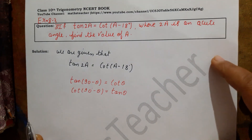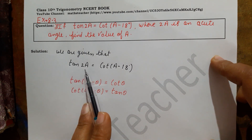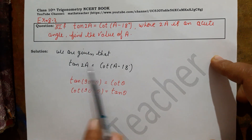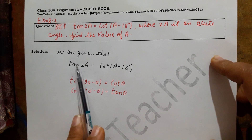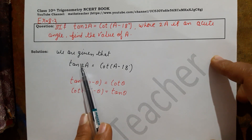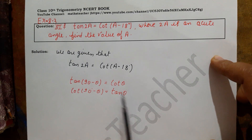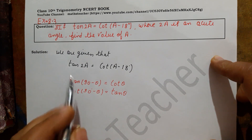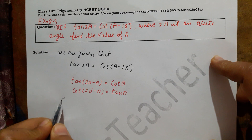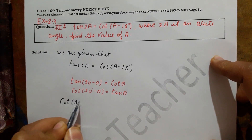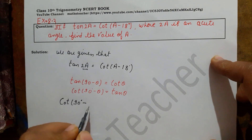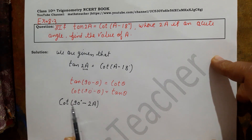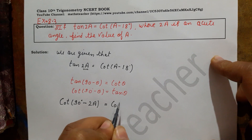So what do we do? We will use these relations. Here we have tan 2A on the left side. We will change tan 2A using the complementary angle identity: tan 2A equals cot(90 minus 2A). We have changed tan into cot, and now both sides have cot.